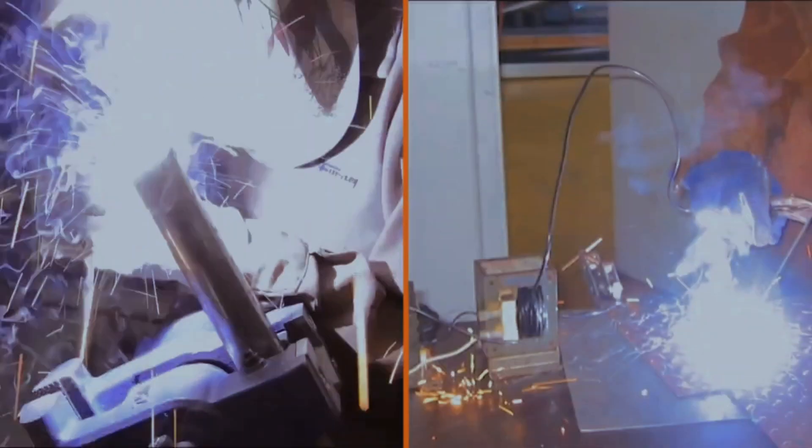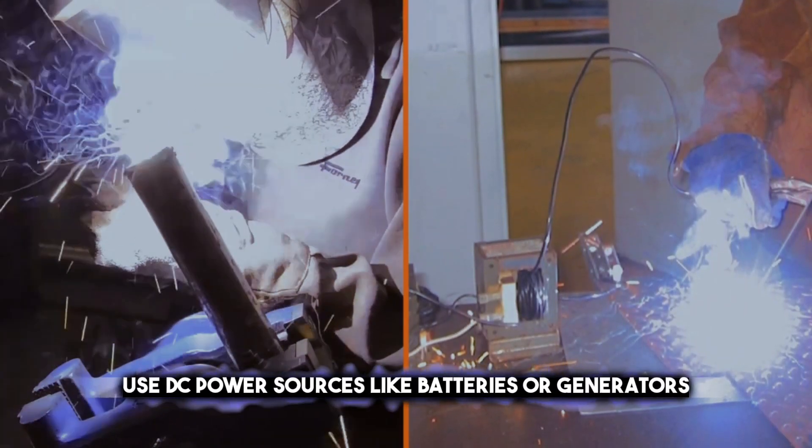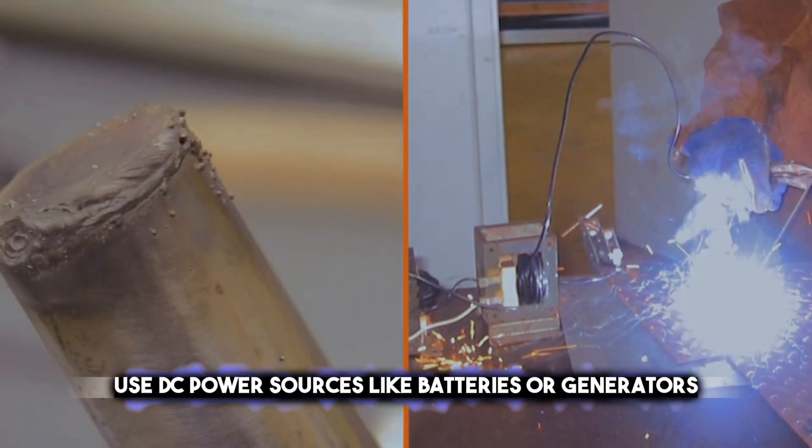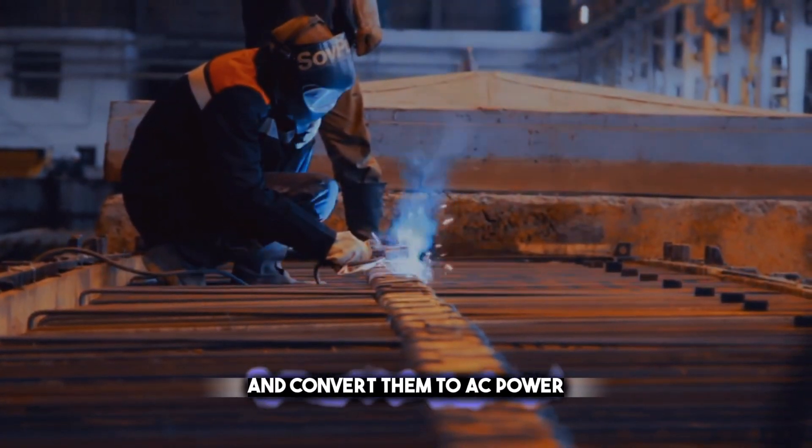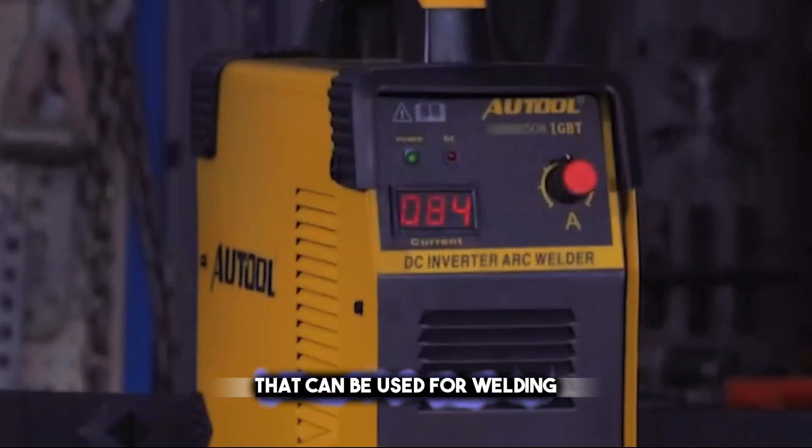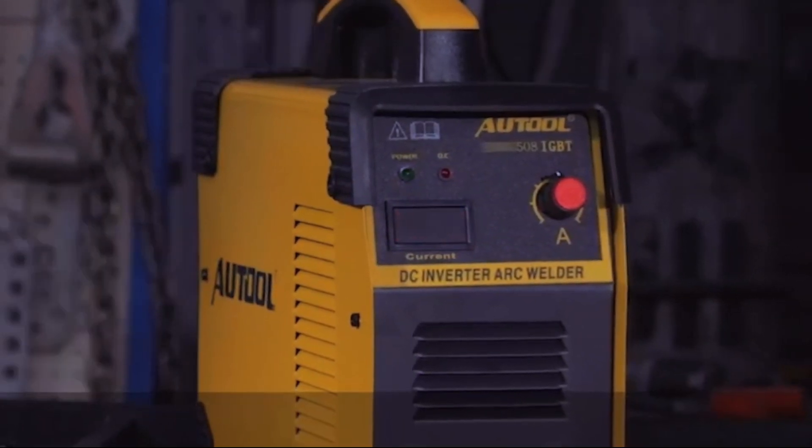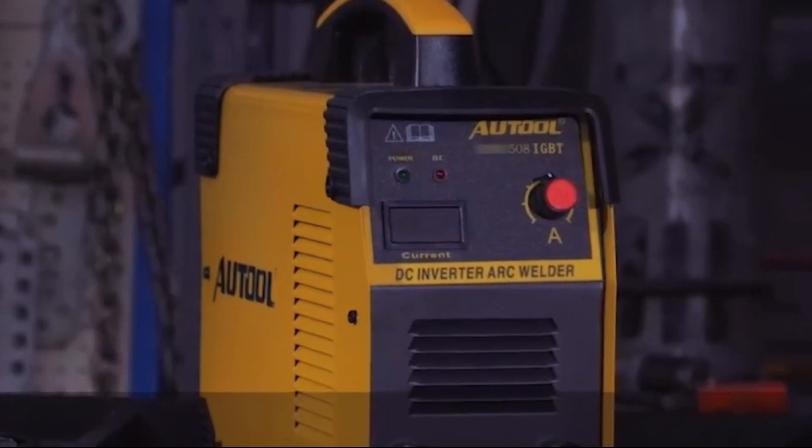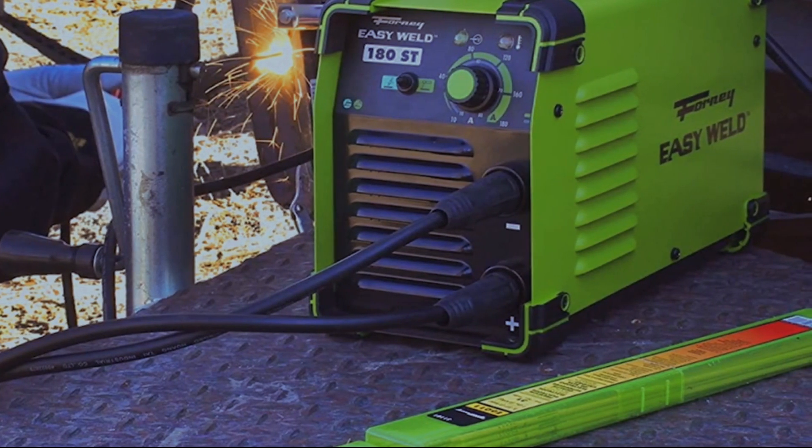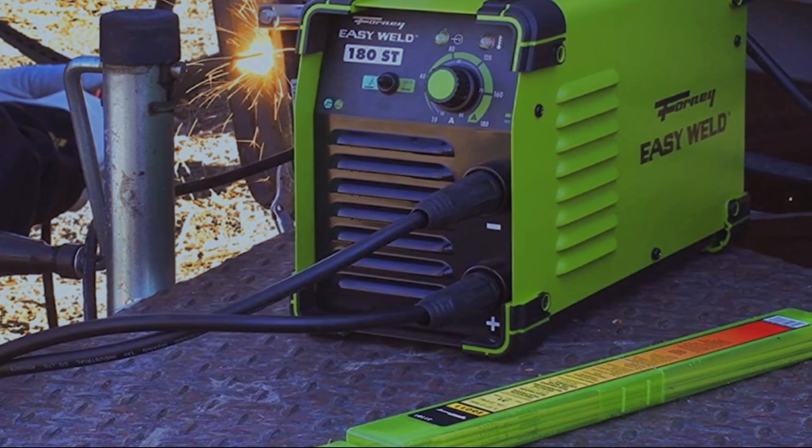Inverter welding machines use DC power sources like batteries or generators and convert them to AC power that can be used for welding. Inverter welding machines have many advantages over conventional welding machines that use AC power sources like mains electricity.